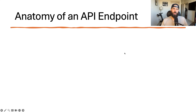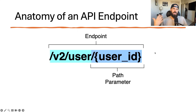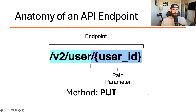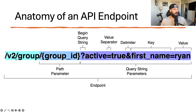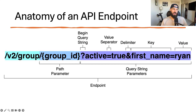Let's look at example endpoints and what they might look like depending on the method used. To update information about an existing user, the endpoint might include a path parameter of the user ID referencing the user to update. The method would likely be PUT, with a payload object containing all the information to update. For a more complex example: you might query a specific group ID as a path parameter, with query string parameters appended to the end. Query strings start with a question mark, followed by key-value pairs delimited by ampersands. In this case, query string parameters filter the data to return only active users whose first name equals Ryan — and the method would most likely be GET.